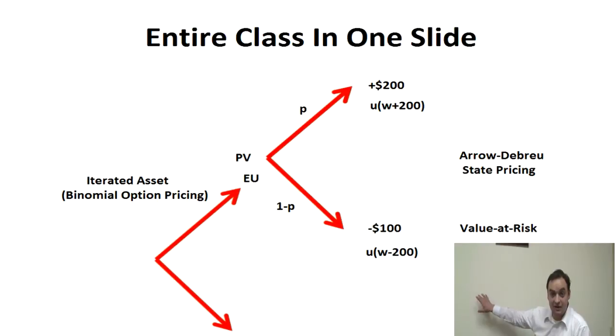If you have another asset that pays off in the same kind of states, on heads it pays something else, on tails it pays something else, you can price them relative to each other, and that sort of relative pricing is a hallmark of traditional finance and risk management.